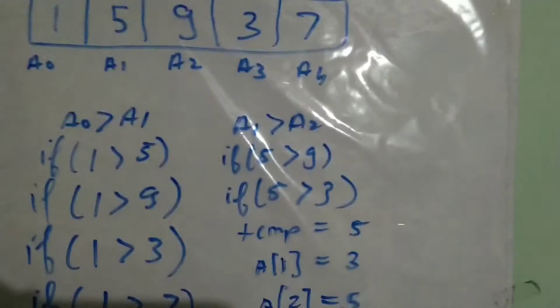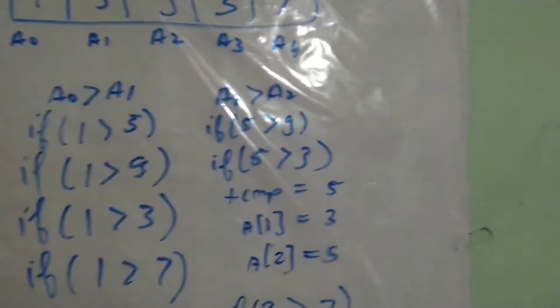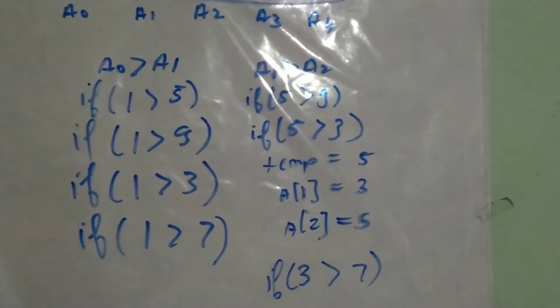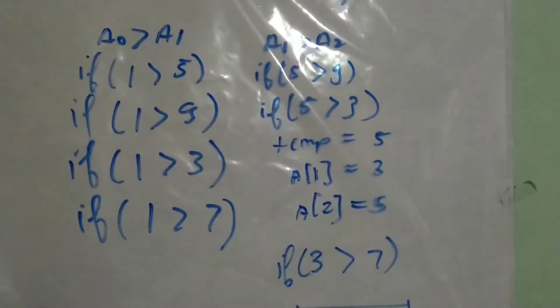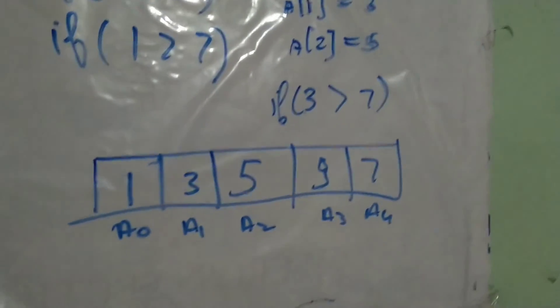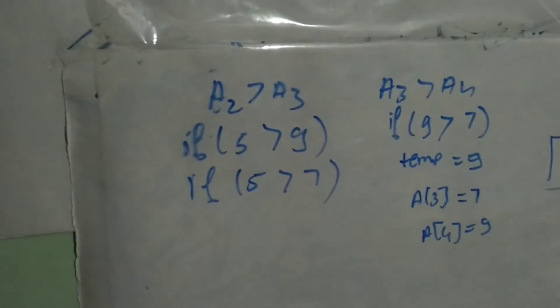Now check a of one against a of two: a of one is five. Is five greater than nine? No. Is five greater than three? Yes — so we swap. The temporary variable holds five, a of i becomes three, and a of j becomes five, where i is one and j is three. After swapping, it checks: is three greater than seven? No. Now the array looks like: one, three, five, nine, seven. Then i increments from one to two.